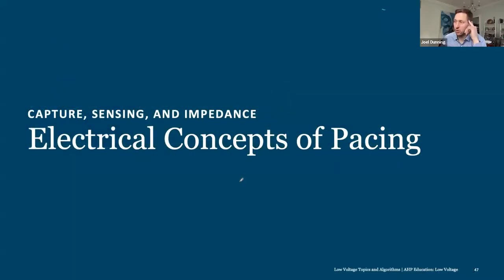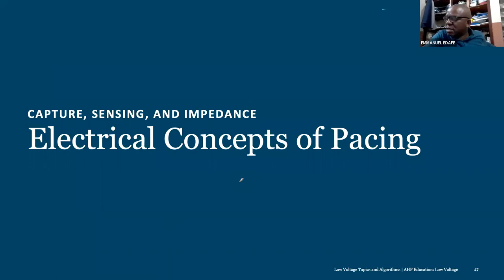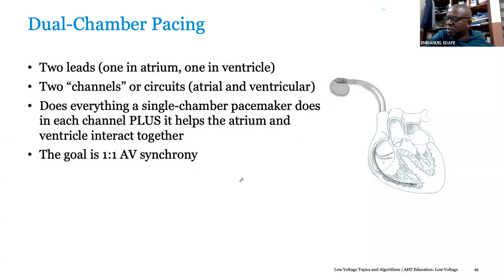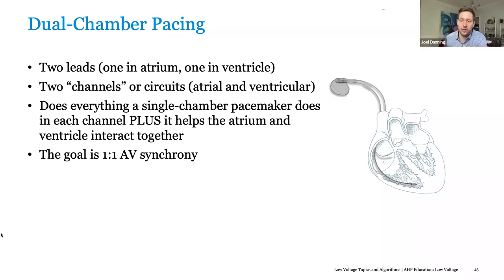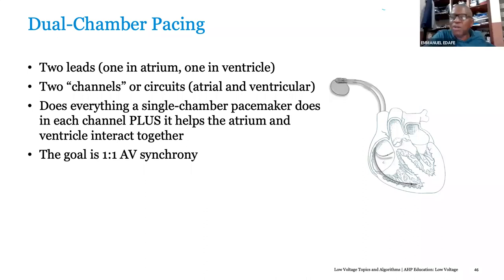The next question is on the issue of blanking — sometimes we program it in partial and partial plus. What is the difference between these two?